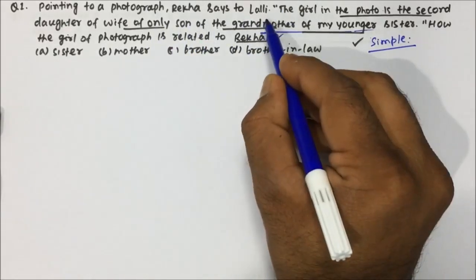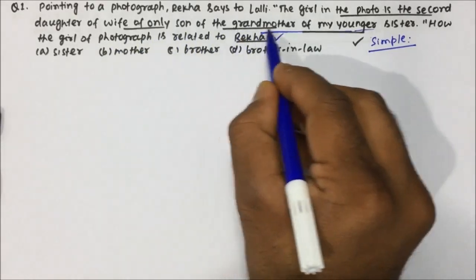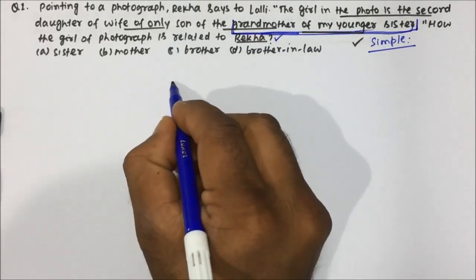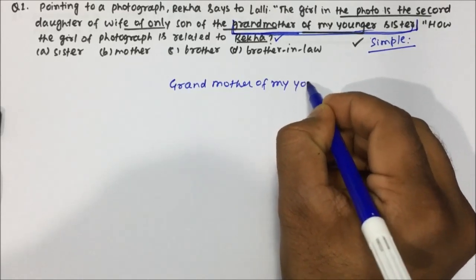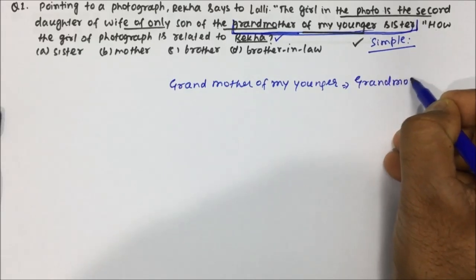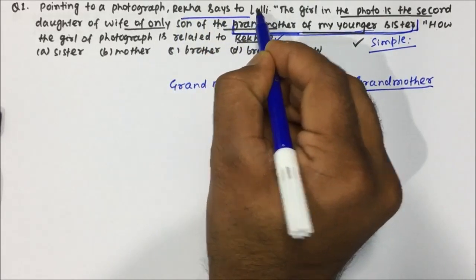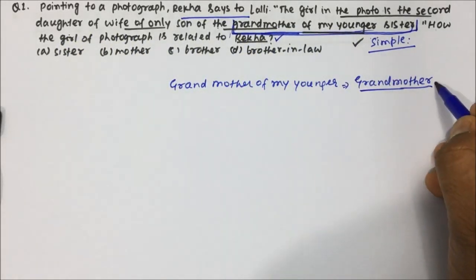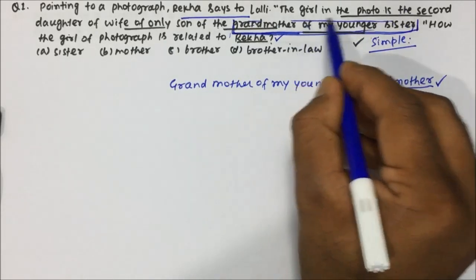Question number one: Pointing to a photograph, Rekha says to Lali, 'The girl in the photo is the second daughter of the wife of the only son of the grandmother of my younger sister.' How is the girl in the photograph related to Rekha? Now, grandmother of my younger sister is nothing but my grandmother — so we can simplify that part to Rekha's grandmother.